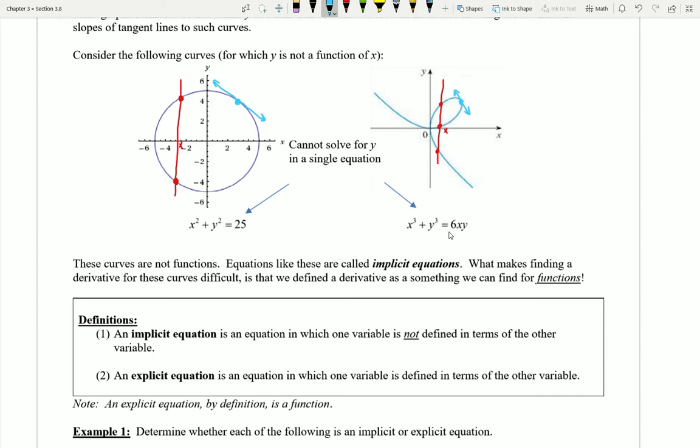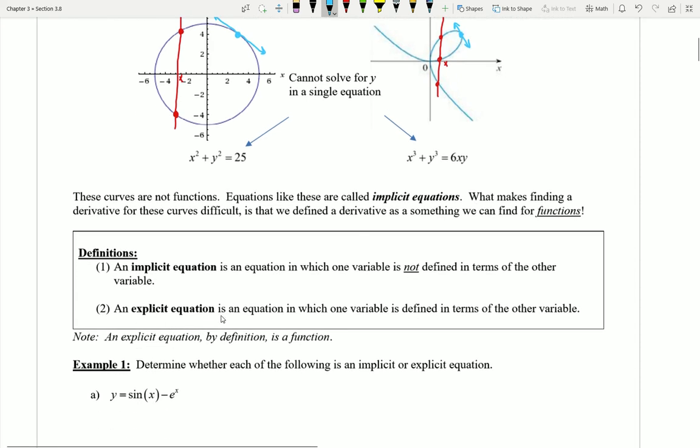I have variables mixed together on one or both sides of the equation. So this is an implicit equation. An explicit equation is an equation in which one variable is defined in terms of the other variable. An explicit equation, by definition, is a function.